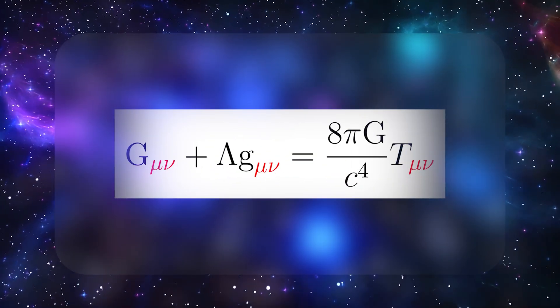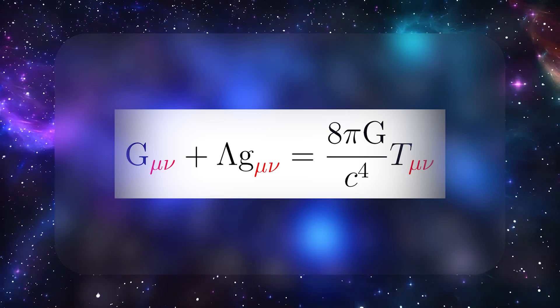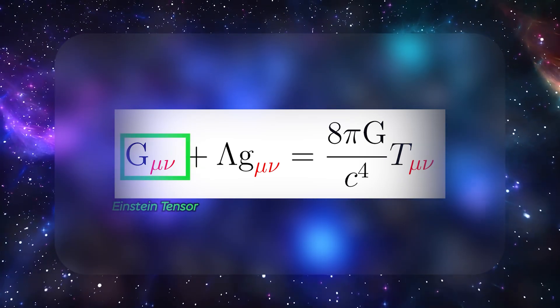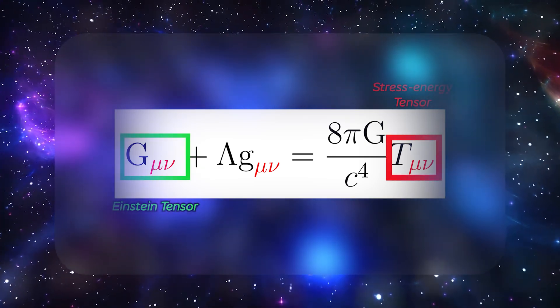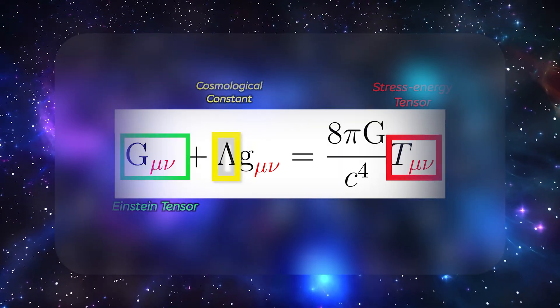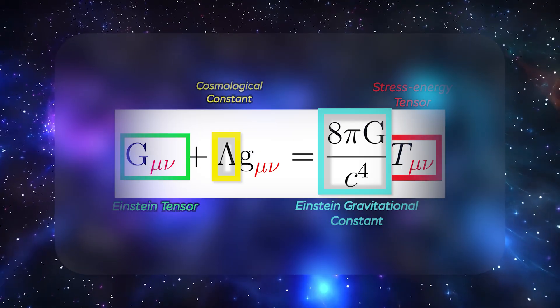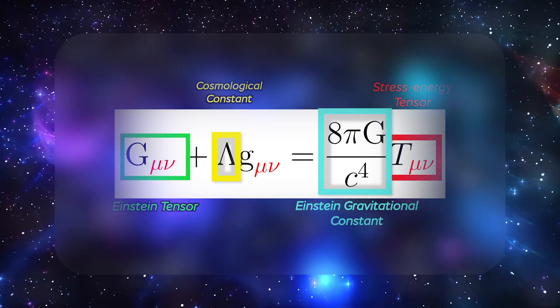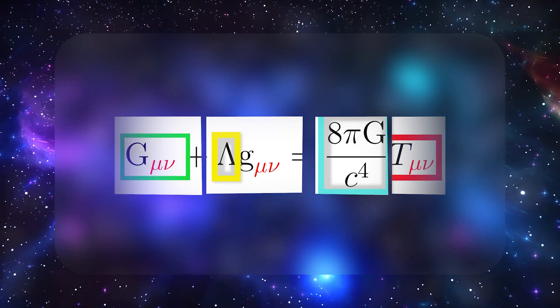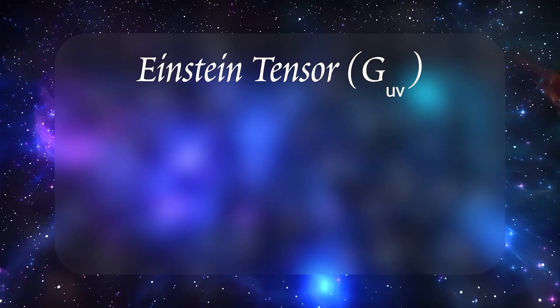Einstein's field equation can be written as involving the Einstein tensor, the stress-energy tensor, the cosmological constant, and the Einstein gravitational constant. It looks complex, but no need to panic. Let's break down each symbol in everyday language. Let's start with the left-hand side, the Einstein tensor.